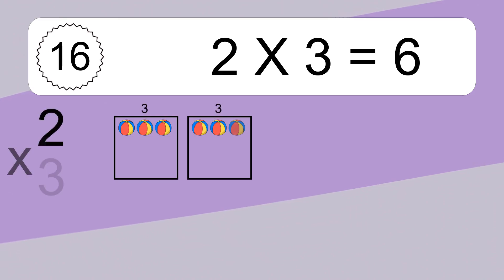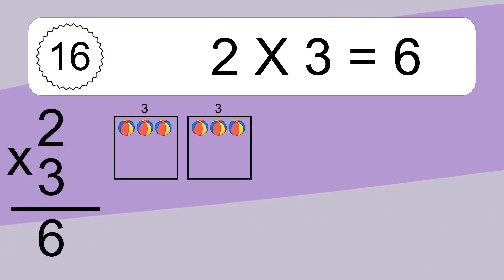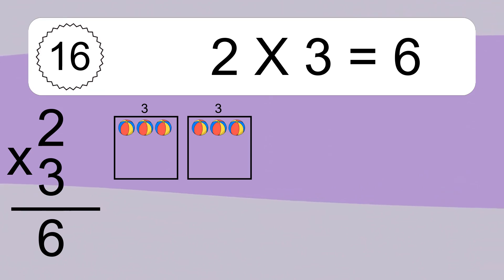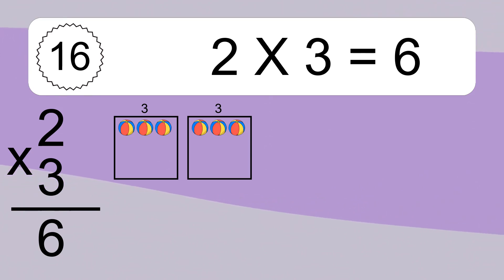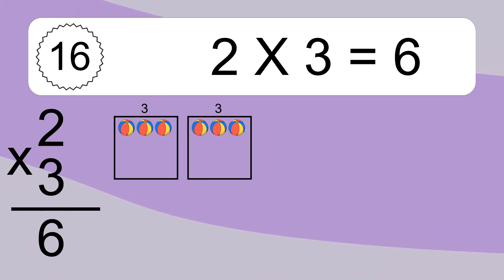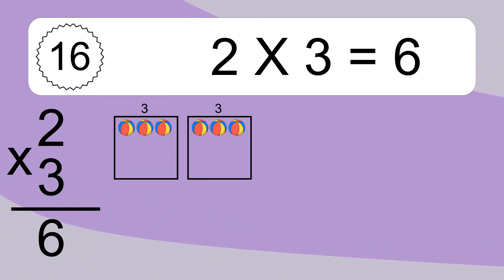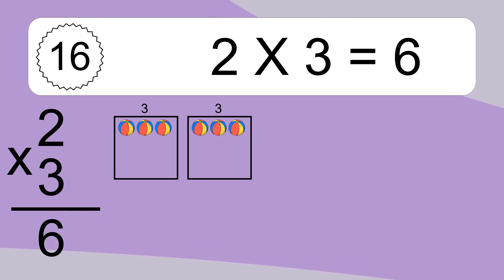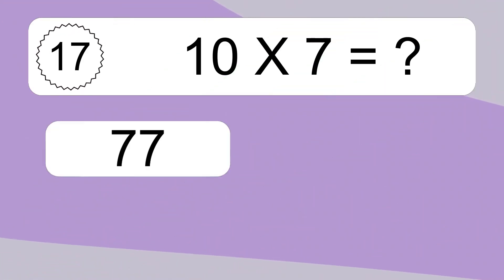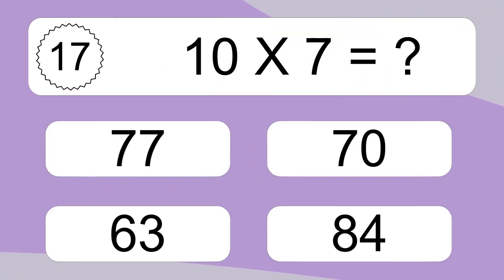2 times 3 equals what? 2 times 3 equals 6. We have 2 boxes, and each box has 3 colorful balls inside. If you count all the balls in all the boxes together, you will have 2 times 3 balls. This equals 6 balls.